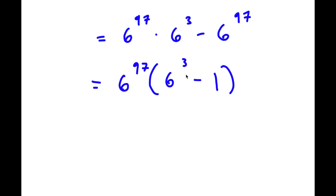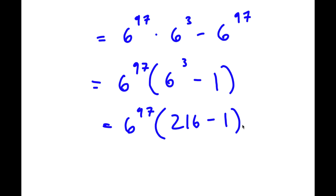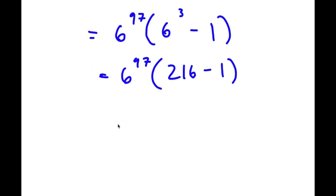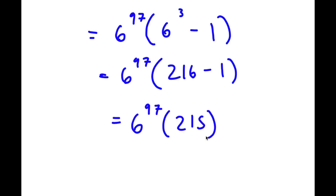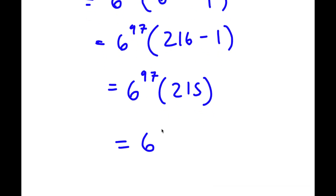Now, 6 to the power of 3: 6 to the power of 2 is equal to 36, and 36 times 6 is equal to 216. So I have 6 to the power of 97 times 216 minus 1. And 216 minus 1 is equal to 215. So now I have 6 to the power of 97 times 215. That is my answer.